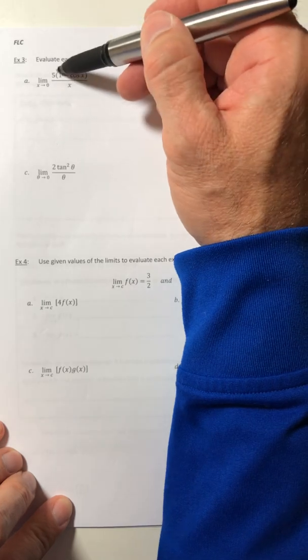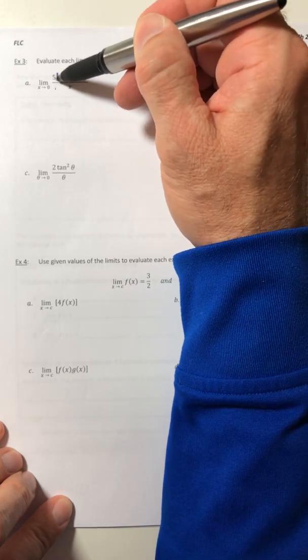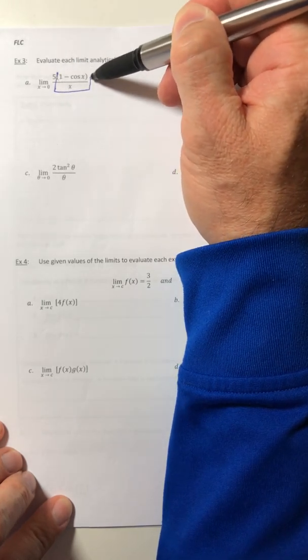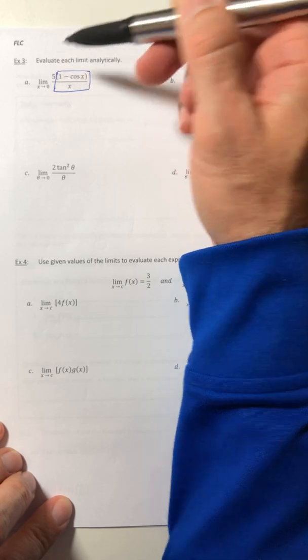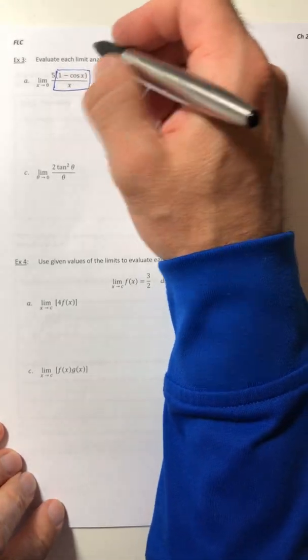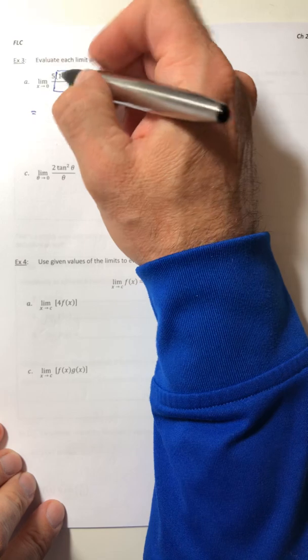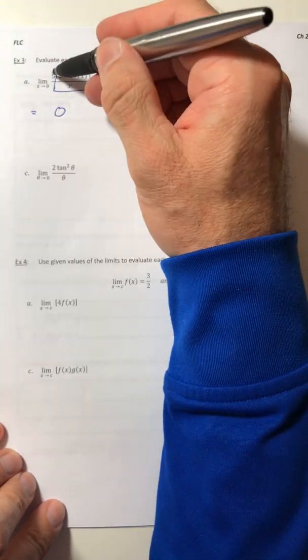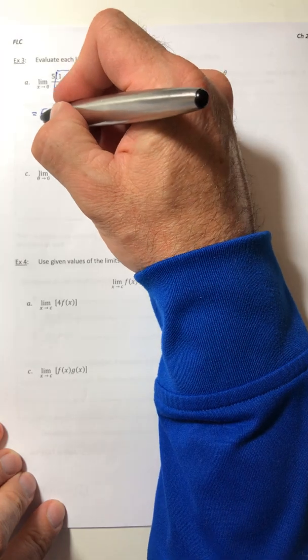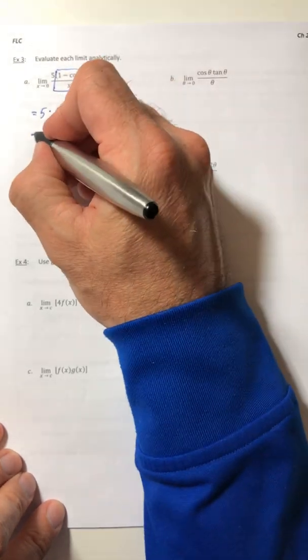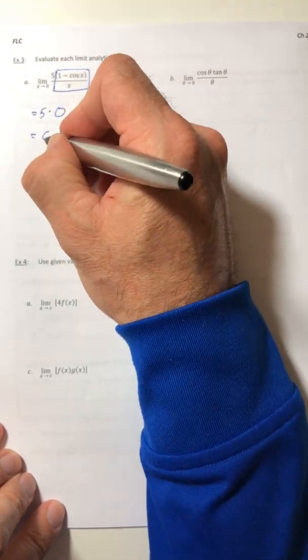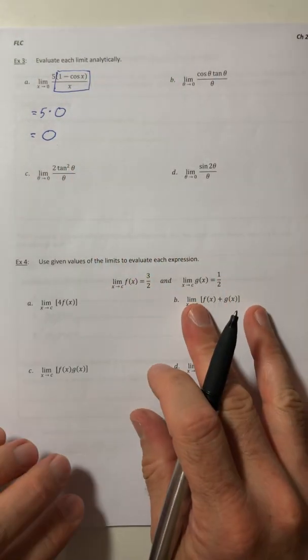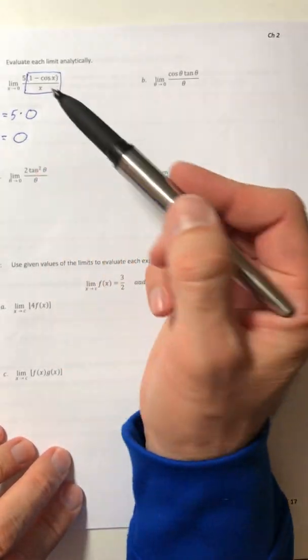Well, if you look at this, that's basically the special limit number two, right? So this on its own is going to go to zero and the five just stays as a five. Five times zero, that's going to give us zero.